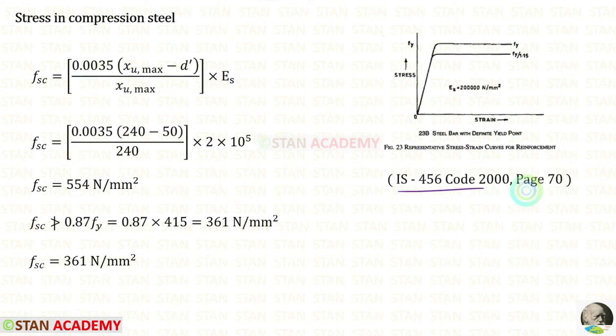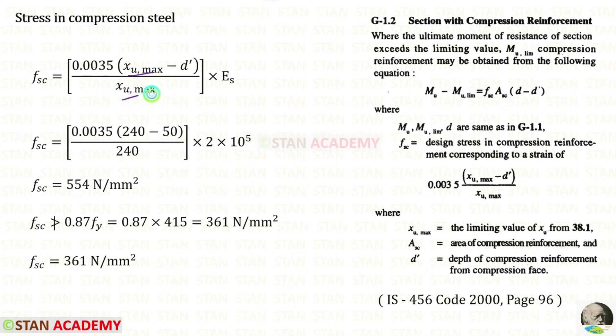And we have to multiply with the Young's modulus of steel. In the code book page number 70, the Young's modulus of steel is given as 200,000 Newton per millimeter square. So for ES we can apply 2 into 10 power 5. XU max just before we have calculated. The effective cover D prime is given in the question as 50. For the stress we will get this.